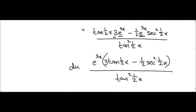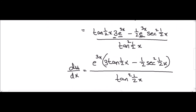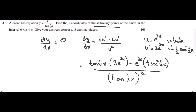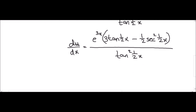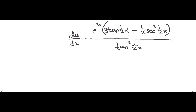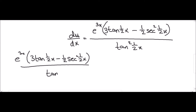Now, to find the x-coordinate of the stationary point, our derivative should equal zero. So we equate: e^(3x) · [3·tan(½x) minus ½·sec²(½x)] over tan²(½x) equals zero.